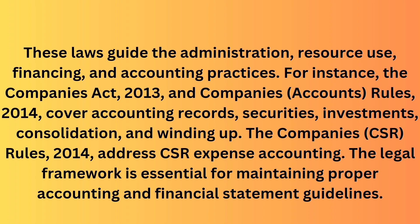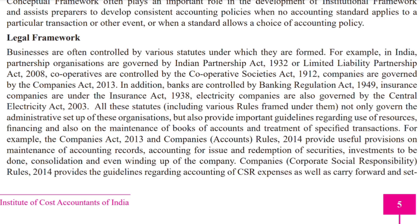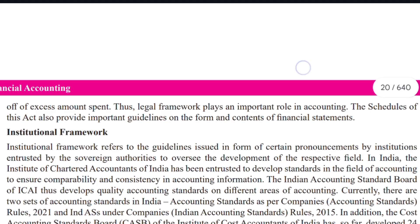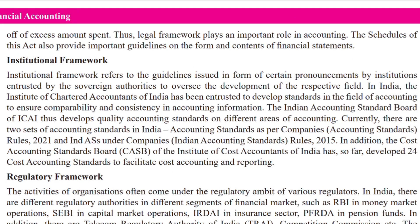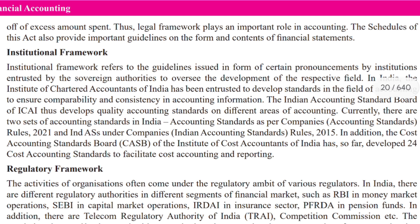It's like telling them how to keep score in the game so everyone can see how well they are doing. It also talks about specific things like how to handle money collected from selling shares or what investments can be made. There's even a set of rules called the Companies Corporate Social Responsibility Rules 2014, which guides companies on how to spend money on good causes — CSR. They have to spend two percent on corporate social responsibility. This guides companies on how to spend money on good causes and what happens if they spend more or less than required. So just like in games where you need to follow rules to play fairly, the legal framework ensures that companies operate in an orderly manner and everyone knows what's expected of them.